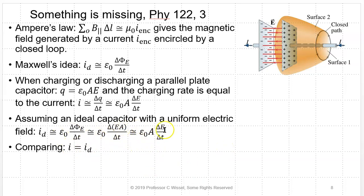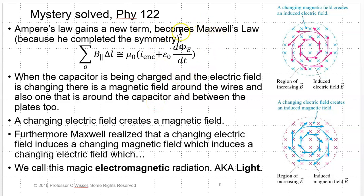Looking at these two equations, they're the same. So I equals I_D — this current is the displacement current; it's the same current you're using to charge the capacitor. This solves the mystery: all you have to do is add the displacement current term. Here's the steady-state condition, and here's what happens when you are charging or discharging the capacitor — the time-varying part. When the capacitor is being charged and the electric field is changing, there is a magnetic field around the wires and also around the capacitor and between the plates. So a changing electric field creates a magnetic field.